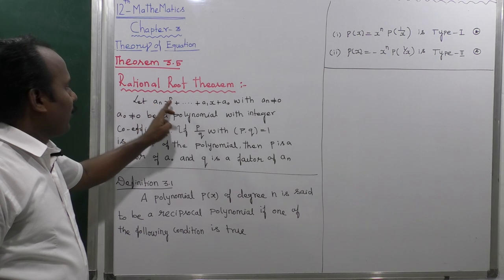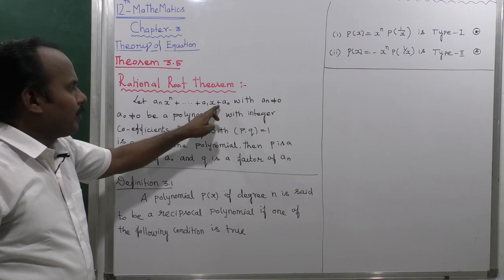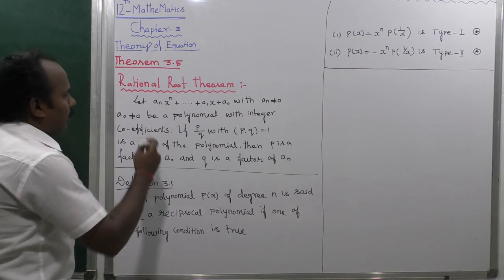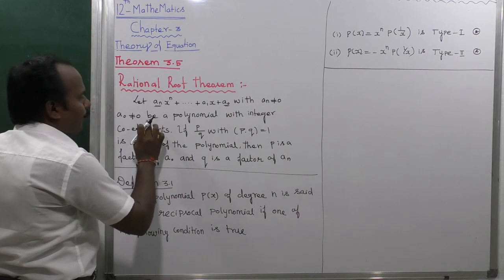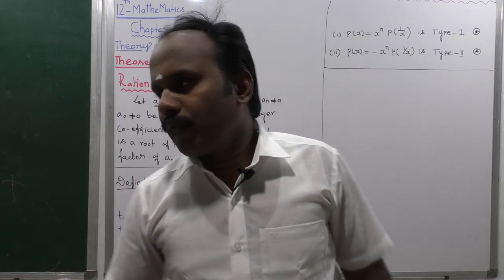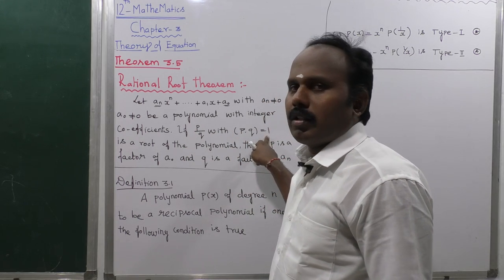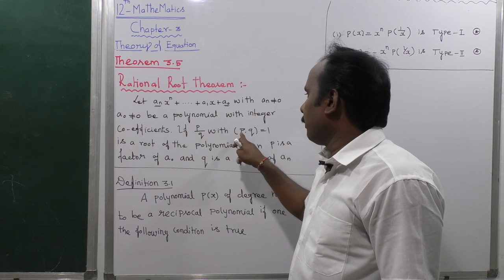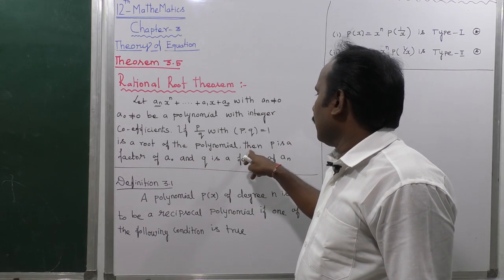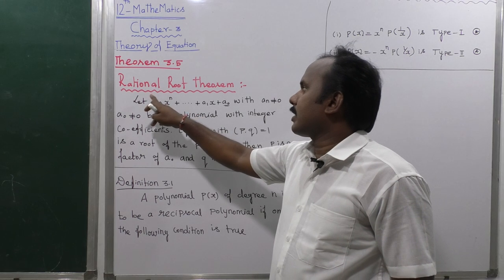Let a_n x^n + a_{n-1} x^{n-1} + ... + a_1 x + a_0, with a_n not equal to 0 and a_0 not equal to 0 — that is, the first element and the last element are not equal to 0 — be a polynomial with integer coefficients. If p/q, where gcd(p, q) = 1, is a root of the polynomial, then p is a factor of a_0 and q is a factor of a_n. That is the Rational Root Theorem.